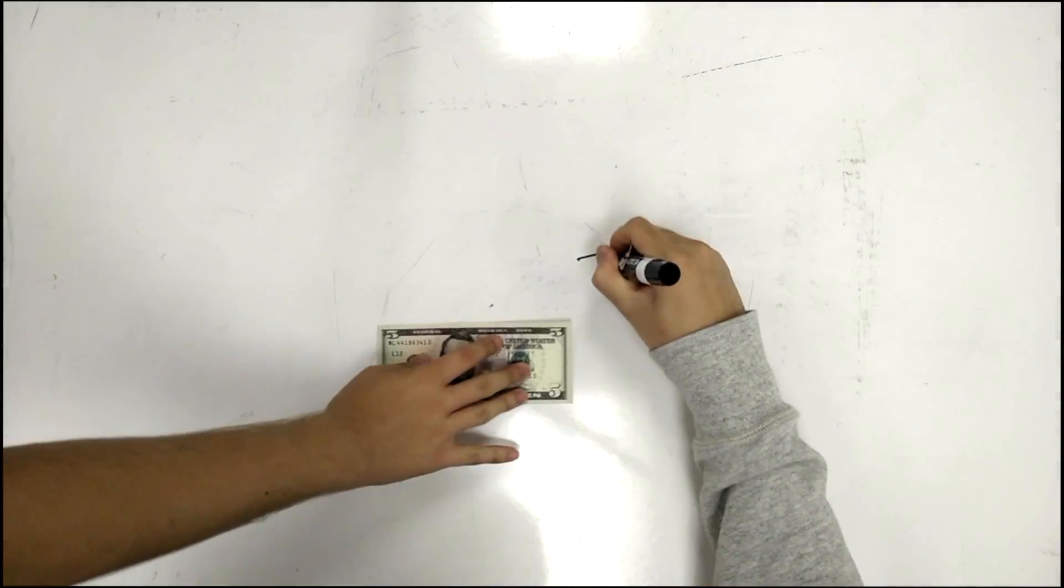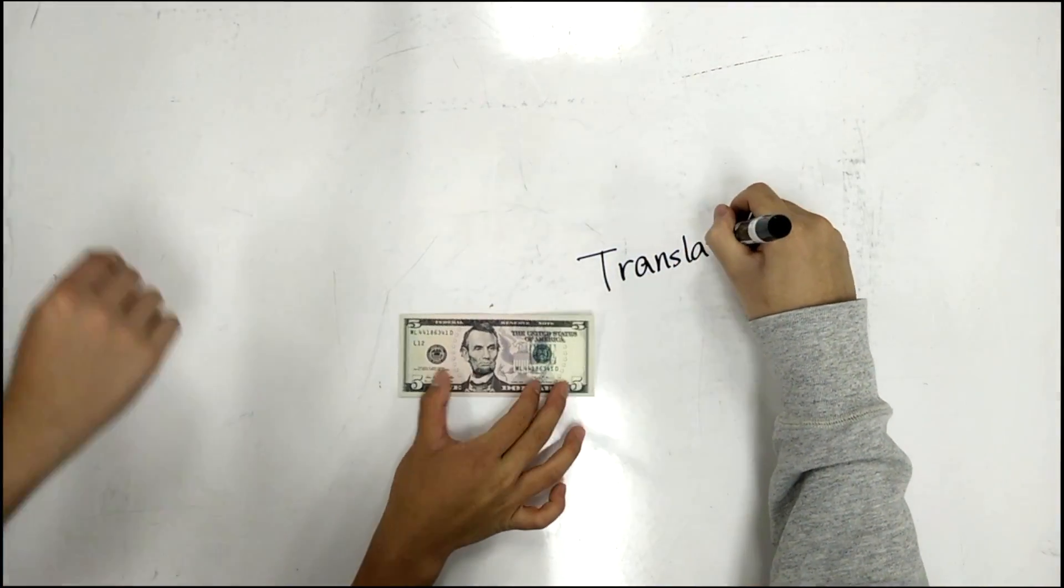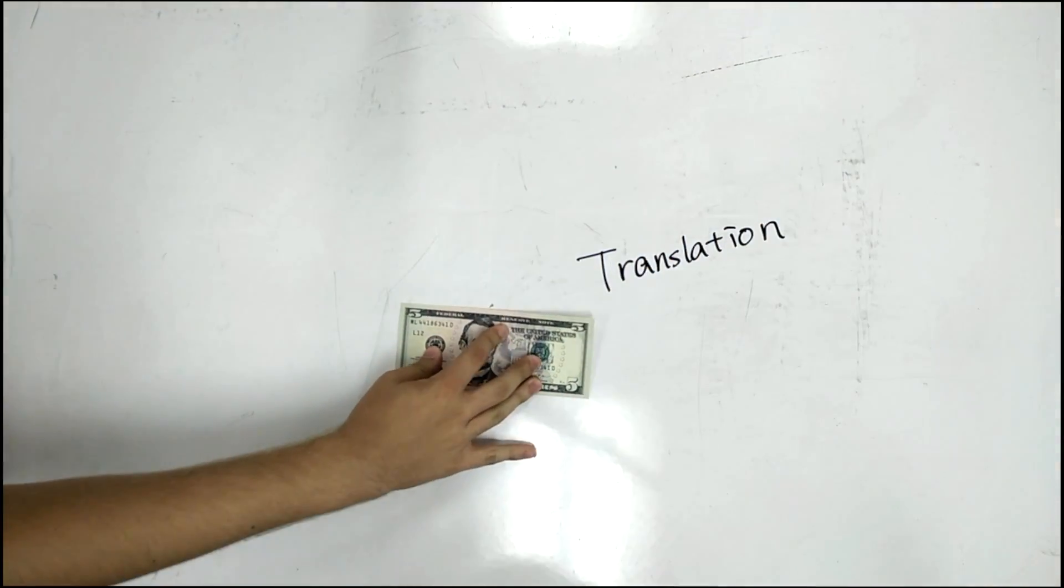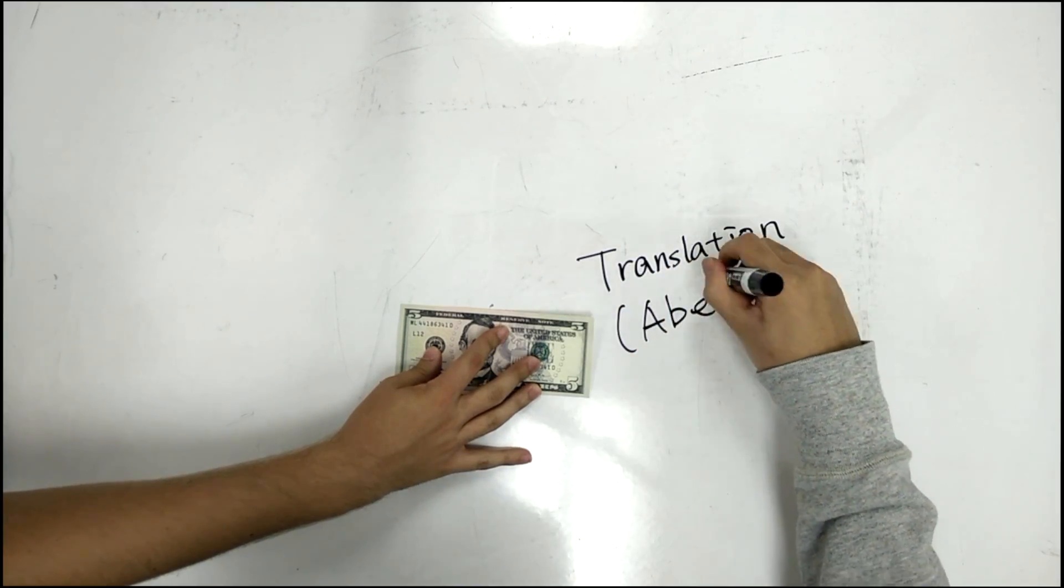Next we have translations. Unlike rotations, translations is when the line of the net force passes through the center of mass. Clement here translates Abe across our whiteboard.